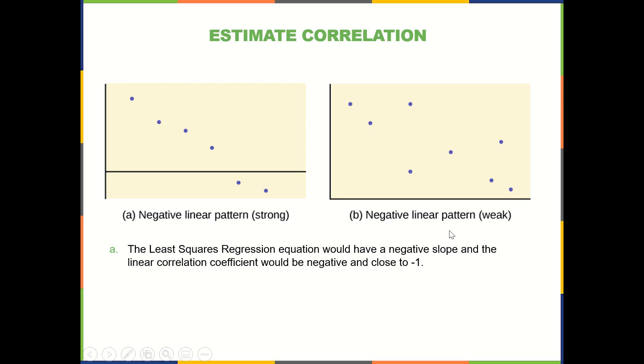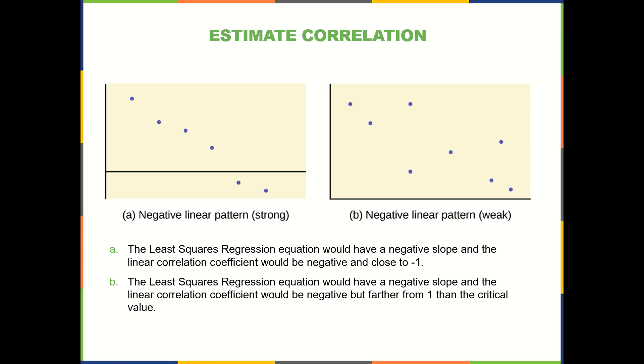And for this one you see negative correlation and the points are loose. So the slope will be negative and the linear correlation will be negative. But this time the r value will be closer to zero.